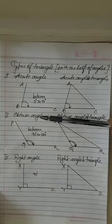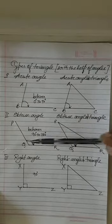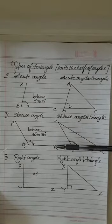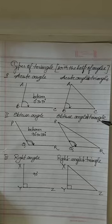Now come to obtuse angle. Obtuse angle is between 90 to 180. So PQR is an obtuse angle. When I joined PR it will become PQR triangle. So it is an obtuse angle triangle.